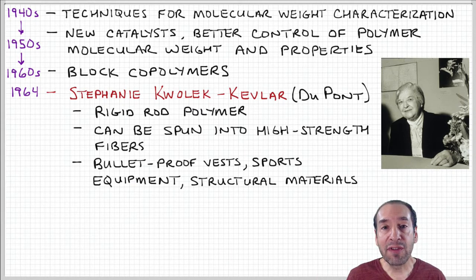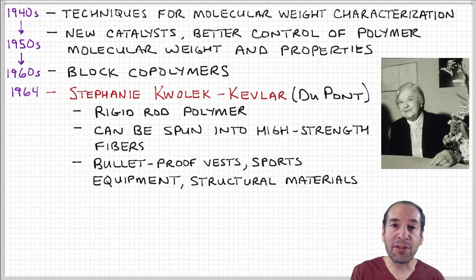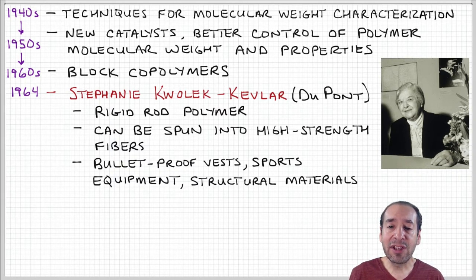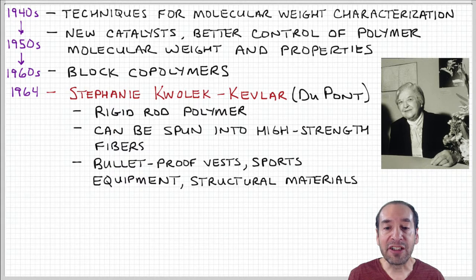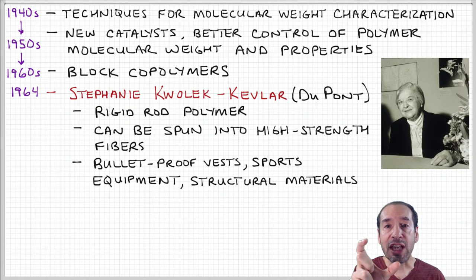One day in a series of experiments, she noticed that a material she produced had a very strange property. Typically, as you concentrate things more and more, they become thicker or more viscous because you're adding more material. But in this case, as the concentration was increased more and more, it reached a point where the material actually became thinner and less viscous. This was later shown to be what's called a liquid crystalline state, arising from the fact that these polymers were not flexible chains but actually very rigid chains — rigid rods.